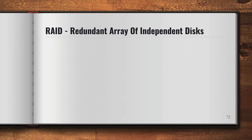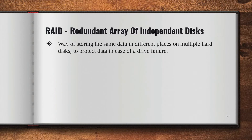So what is RAID? RAID is a way of storing the same data in different places on multiple hard disks. This is used to protect the data in case of a drive failure. So if you store data at multiple places, then in case one drive fails, at least we have the data on the second one. It's also useful for performance purposes, where read and write can be done parallelly.